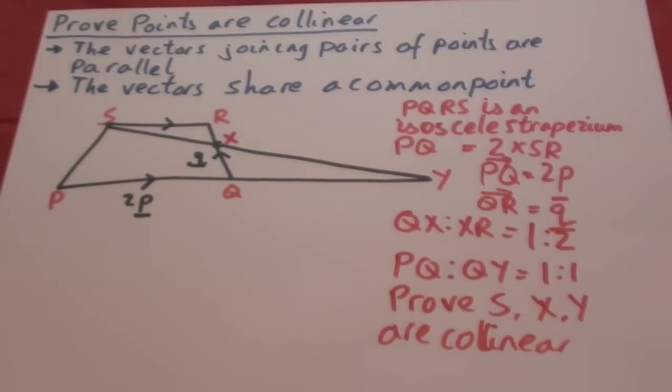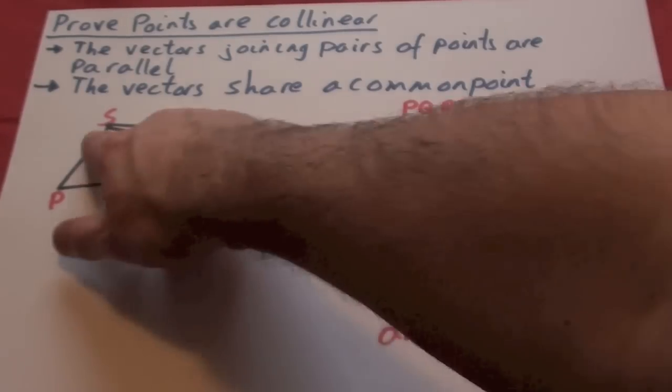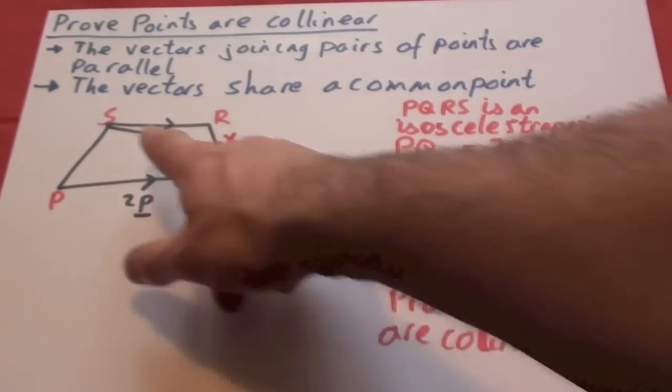Finally, we're going to prove that points are collinear. The vectors joining pairs of points are parallel and the vectors share a common point. Collinear points are points which lie on the same exact line and share a common point.